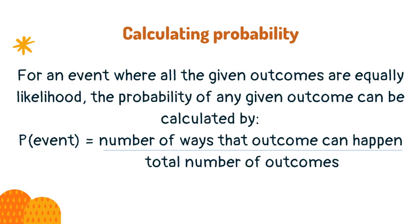For an event where all the given outcomes are equally likely, the probability of any given outcome can be calculated by: the probability of an event equals the number of ways that outcome can happen divided by the total number of outcomes.